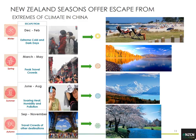Anchoring our months to what's happening in New Zealand — and understanding what's happening in China — is really important. The December to January period in China is extremely dark, cold, and often quite dirty in cities, making our very moderate summer climate very pleasant as a contrast. The March to May period sees peak travel in China and it's extremely crowded, and popular global tourism destinations in the northern hemisphere are also very busy — but New Zealand isn't. In June to August it's often soaring heat, very humid and polluted in China, making it a very difficult time.